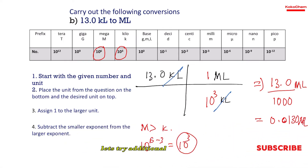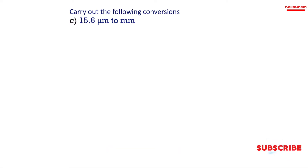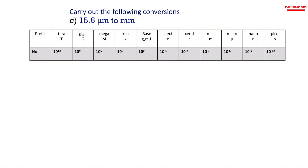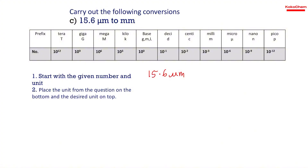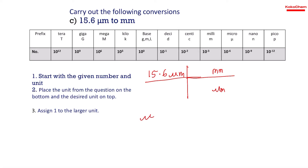Try another example: 15.6 micrometers to millimeters. Step 1: The given number and unit is 15.6 micrometers. Step 2: Place micrometer on the bottom and millimeter on top so the units cancel. Step 3: Determine the larger unit — micrometer is 10 to the power negative 6 and millimeter is 10 to the power negative 3, so millimeter gets 1.